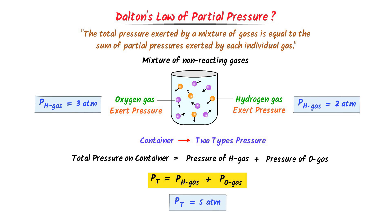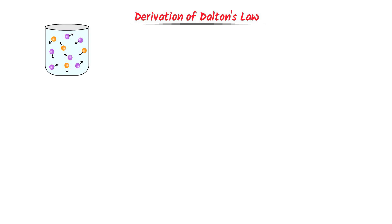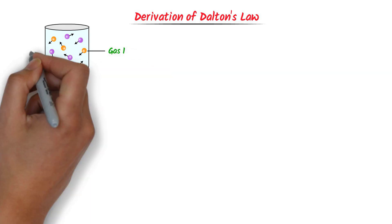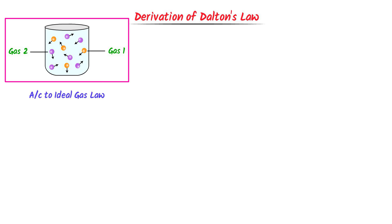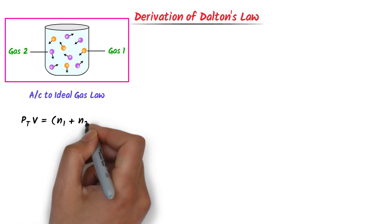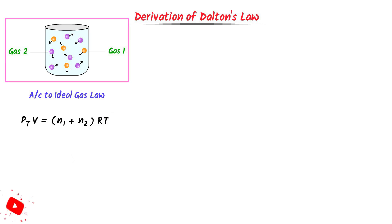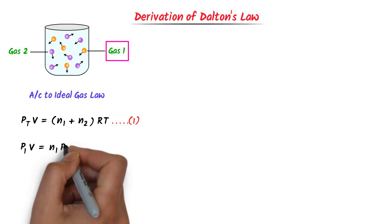Let's note down all these important points. Now I will teach you the derivation of Dalton's Law of Partial Pressure. Consider a mixture of non-reacting gases in this container — let this be gas number 1 and this be gas number 2. According to the ideal gas law, total pressure Pt times V is equal to the number of moles of the first gas plus the number of moles of the second gas, times RT. Let this be equation number 1. Secondly, according to the ideal gas law, the pressure of the first gas on the wall of the container is P1, and P1 times V is equal to the number of moles of the first gas times RT. Let this be equation number 2.